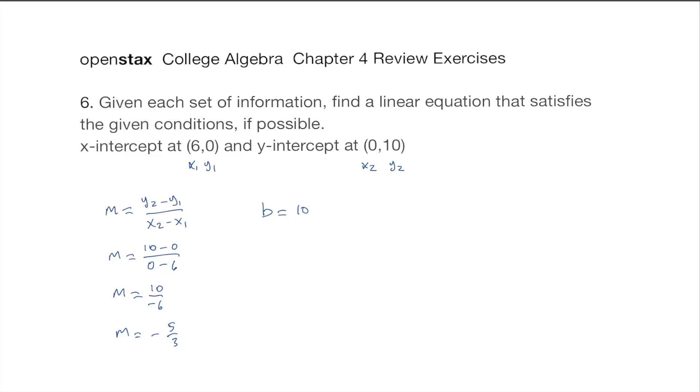And now the slope-intercept form is y equals mx plus b. And so we have y is minus 5 thirds x plus 10. And that is the linear equation that satisfies the given conditions.